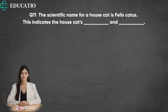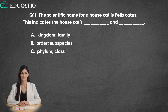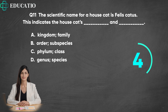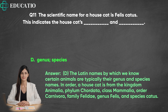Question 11. The scientific name for a house cat is Felis catus. This indicates the house cat's genus and species. A. Kingdom, Family. B. Order, Subspecies. C. Phylum, Class. D. Genus, Species. Answer: D. The Latin names by which we know certain animals are typically their genus and species names. In order, a house cat is from the kingdom Animalia, Phylum Chordata, Class Mammalia, Order Carnivora, Family Felidae, Genus Felis, and Species Catus.